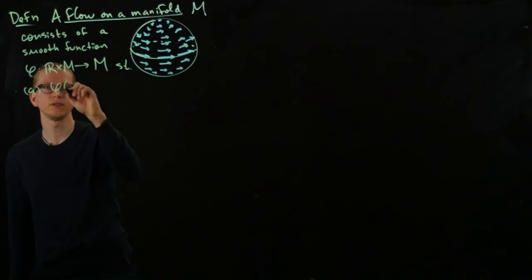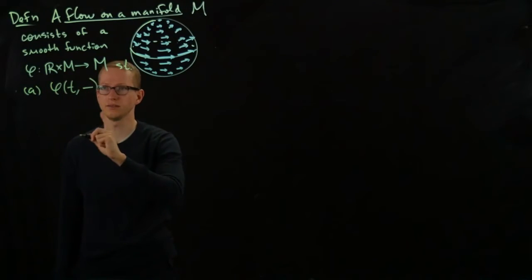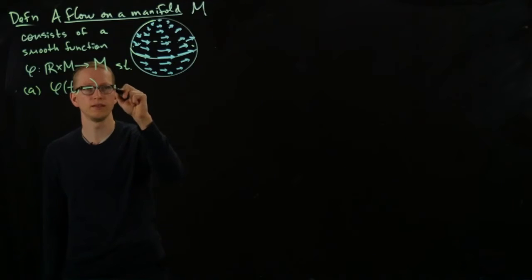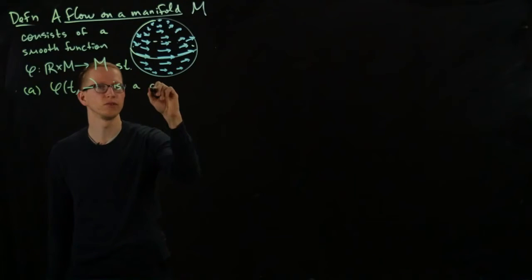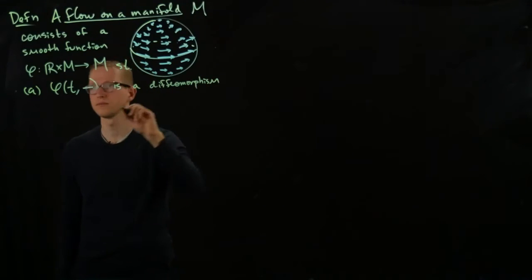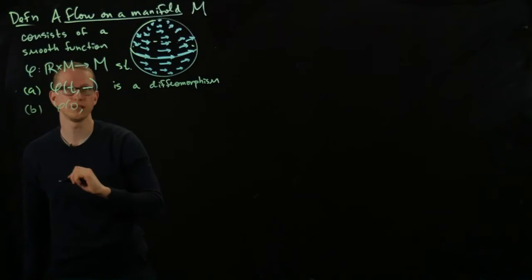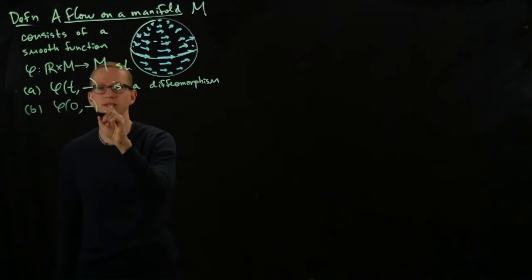One is that φ_t, when you restrict φ to any point t, this is a diffeomorphism. And b, when you say that t equals 0, we actually get the identity.